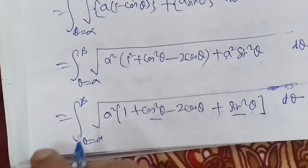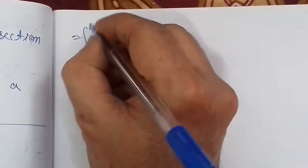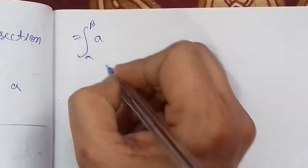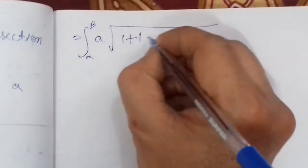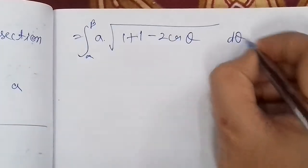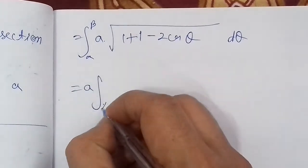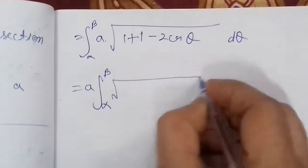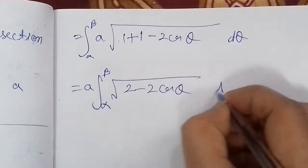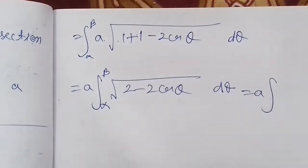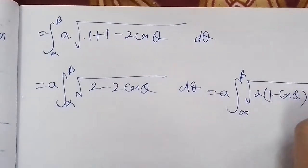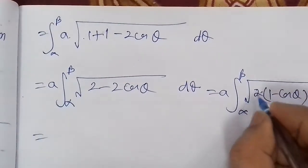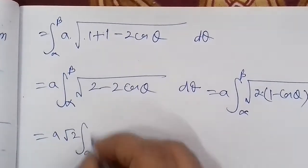Taking a out from the root: = a integral α to β. Since cos²θ + sin²θ = 1, we get 1 + 1 - 2cos θ dθ. = a integral α to β square root of [2(1 - cos θ)] dθ. We can take 2 out from the root here.